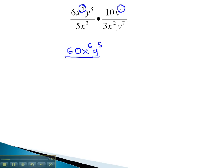In the denominator, we can multiply 5 times 3 to get 15, and add the exponents on the x's. 3 plus 2 gives us x to the 5th. We also have a y to the 7th.